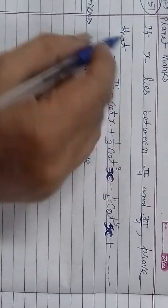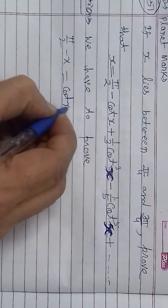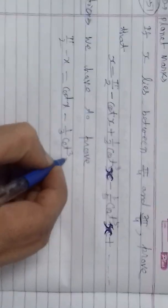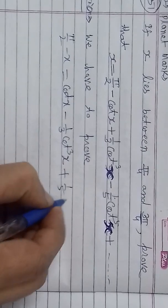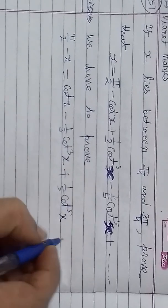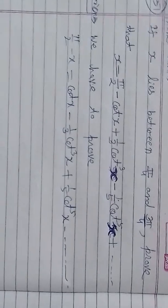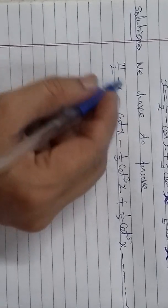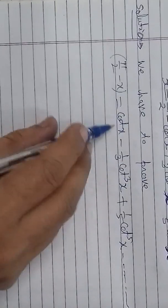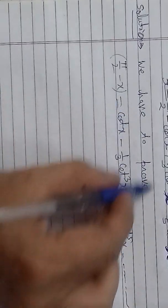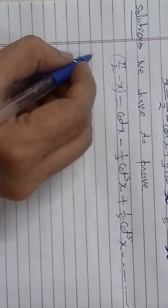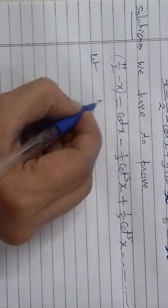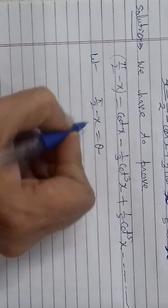So on transposing, cot x becomes minus 1/3 cot³x, and this plus becomes 1/5 cot⁵x minus, and so on to infinite number of terms — this we now have to prove. Gregory series cannot be applied directly for x here, since it works for tan. So let us substitute: मान लेते हैं कि π/2 minus x equals theta.